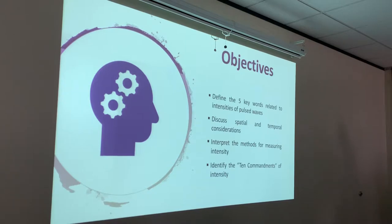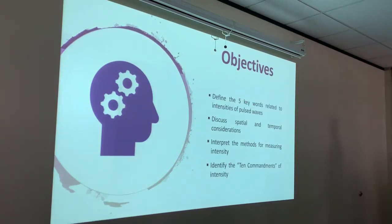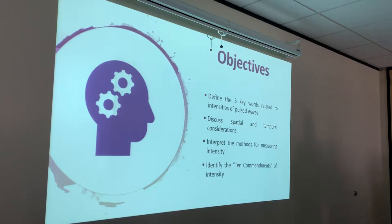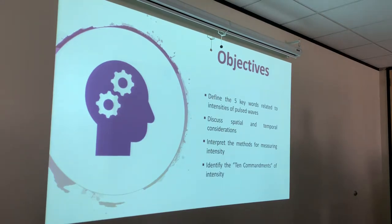During this chapter, we're going to define the five keywords related to the intensities of pulse waves, and discuss spatial and temporal considerations — those are kind of like the subdivisions of intensity. Remember, because the beam isn't uniform: according to our biggest parameters — amplitude, power, and intensity — as the beam propagates, it's going to lose strength, lose size, lose magnitude. Those are what the biggest parameters describe.